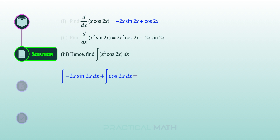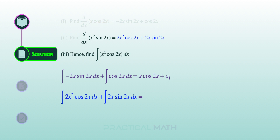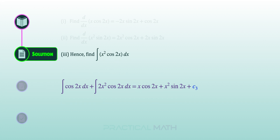For the last part, using the concept of integration as the reverse of differentiation, we integrate the result in part 1, giving us on the left-hand side x cosine 2x plus c1, where c1 is the constant of integration. Similarly, integrating the result in part 2 gives x squared sine 2x plus c2. To find the integral of x squared cosine 2x, we need to eliminate the unwanted terms — the integral of 2x sine 2x — by adding both equations, giving us a result with constant c3.